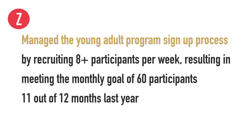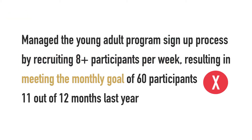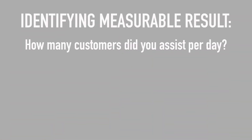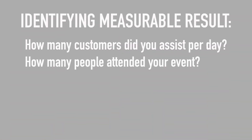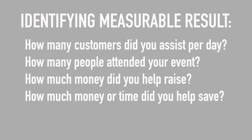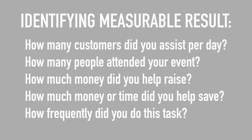I backed up my Z — managed the young adult sign-up process — with numbers by describing how many participants I recruited per week. I also backed up my X with quantitative data showing that our goal was 60 participants a month. And finally, I included my Y, the measurable result being that we met our goal 11 out of 12 times. When you're doing this step, you could ask yourself: how many customers did you assist per day? How many people attended your event? How much money did you help raise or save? And how frequently did you do this task?